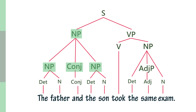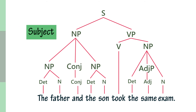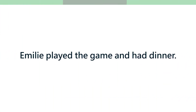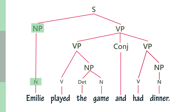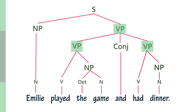In this sentence, two noun phrases that have been coordinated constitute the subject noun phrase. Consider 'Emily played the game and had dinner.' You need a noun phrase for the subject and a verb phrase. The verb phrase consists of two conjoined verb phrases and a conjunction. This might seem like a weird situation in which a verb phrase contains more verb phrases, but at this level of analysis the model allows this.